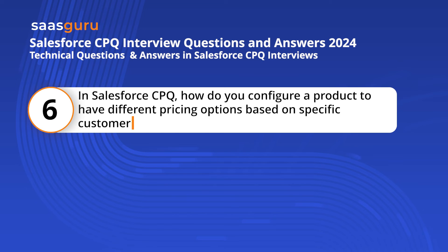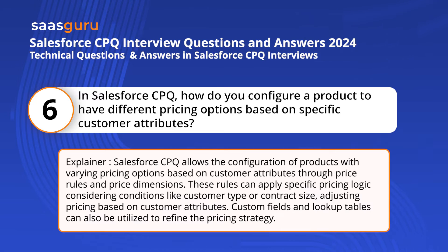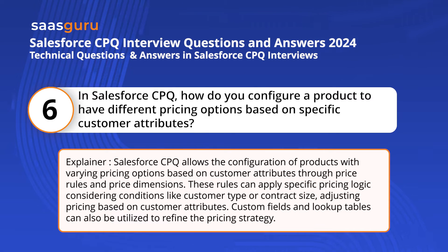Question 6. In Salesforce CPQ, how do you configure a product to have different pricing options based on specific customer attributes? Salesforce CPQ allows the configuration of products with varying pricing options based on customer attributes through price rules and price dimensions. These rules can apply specific pricing logic considering conditions like customer type or contract size, adjusting pricing based on customer attributes. Custom fields and lookup tables can also be utilized to refine the pricing strategy.